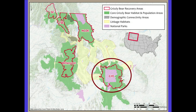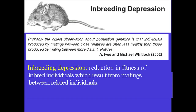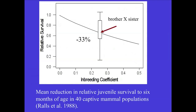The greater Yellowstone ecosystem population has been isolated for decades from other populations of grizzly bears. One of the problems with isolated populations is that eventually there is inbreeding — many of the animals become related, leading to matings between related individuals. Probably the oldest thing we know about population genetics is that individuals produced by matings between relatives are often less healthy than those produced by matings between more distant relatives. This is what we call inbreeding depression: a reduction in fitness resulting from matings between related individuals.